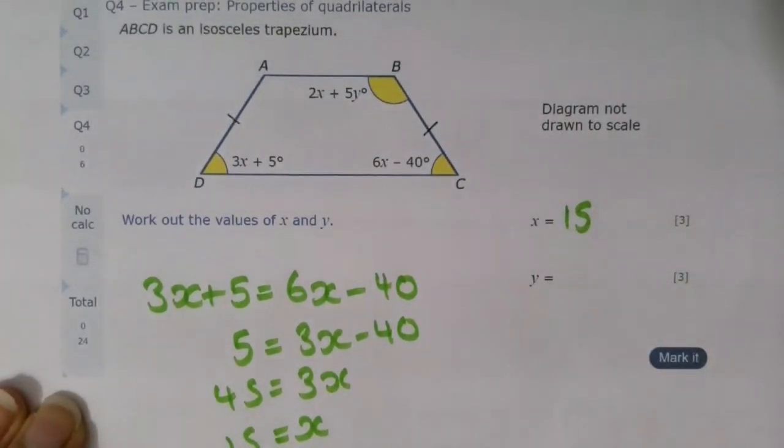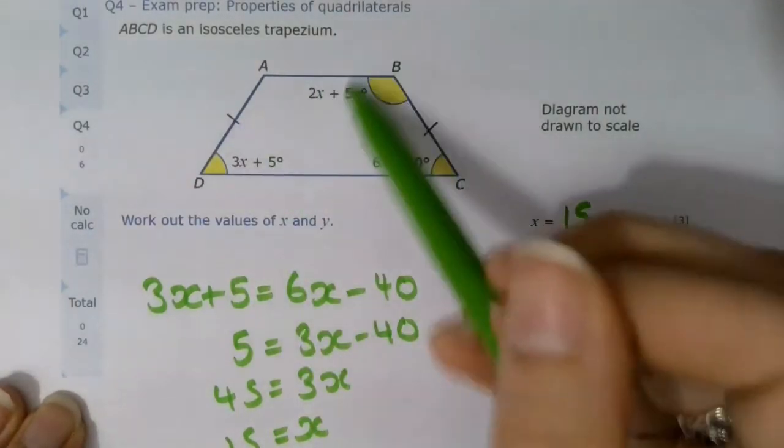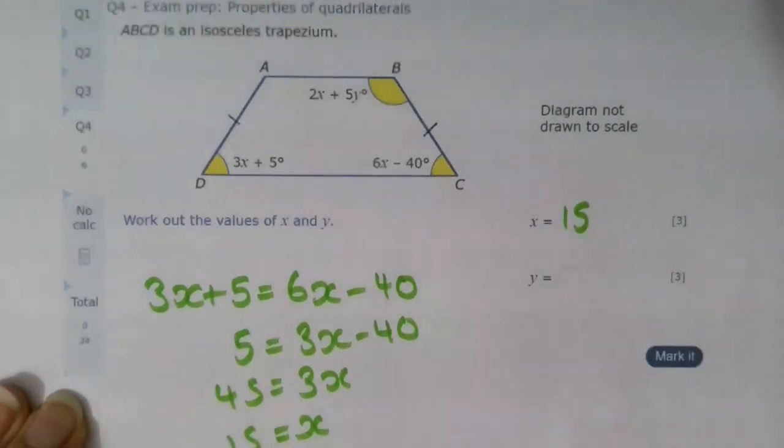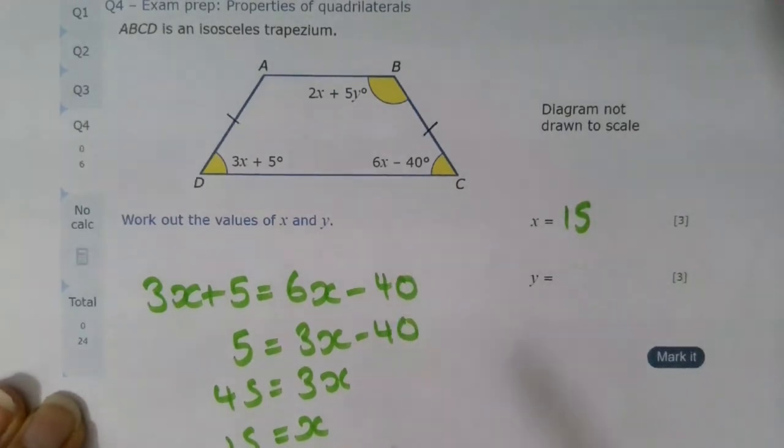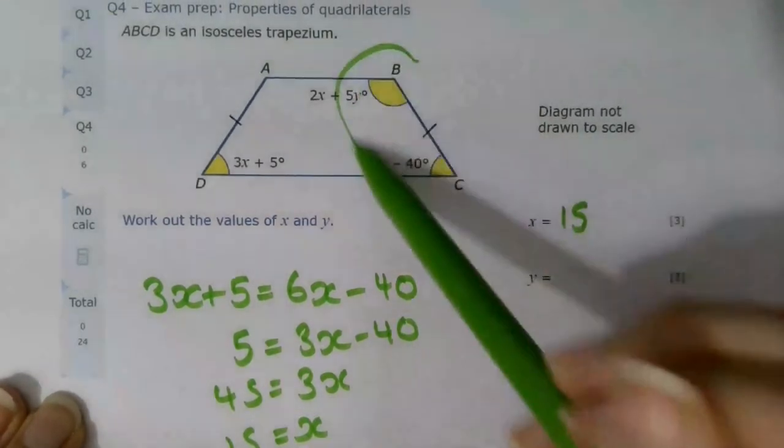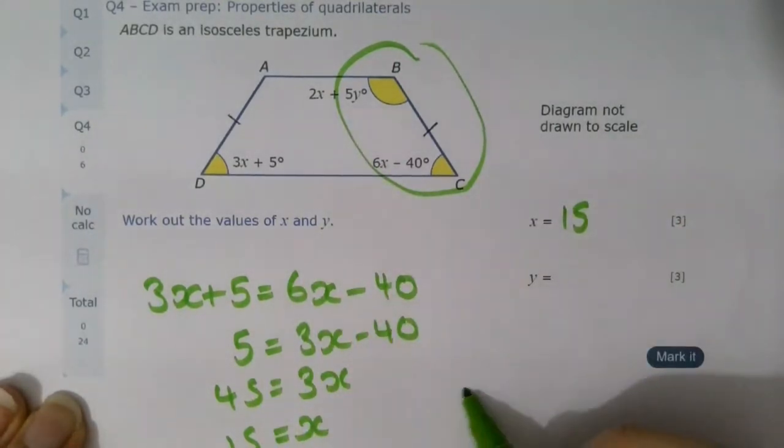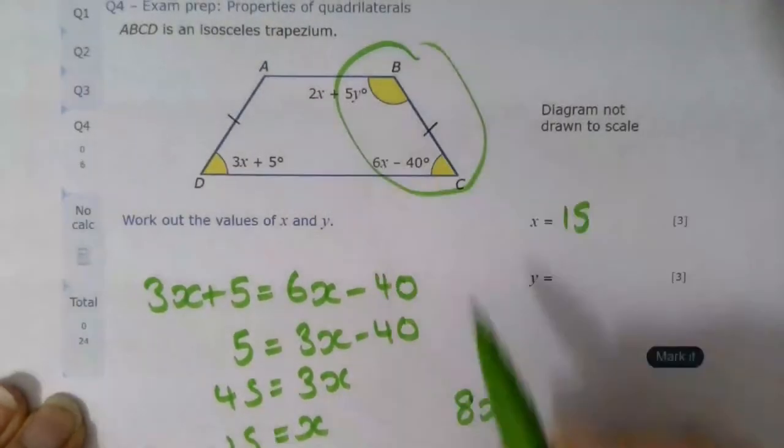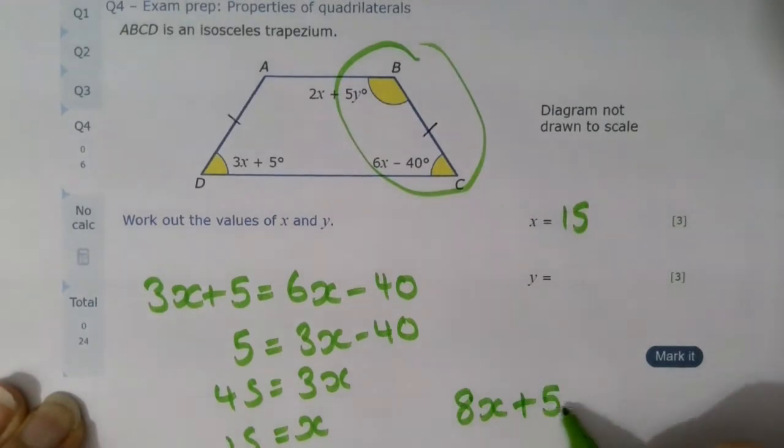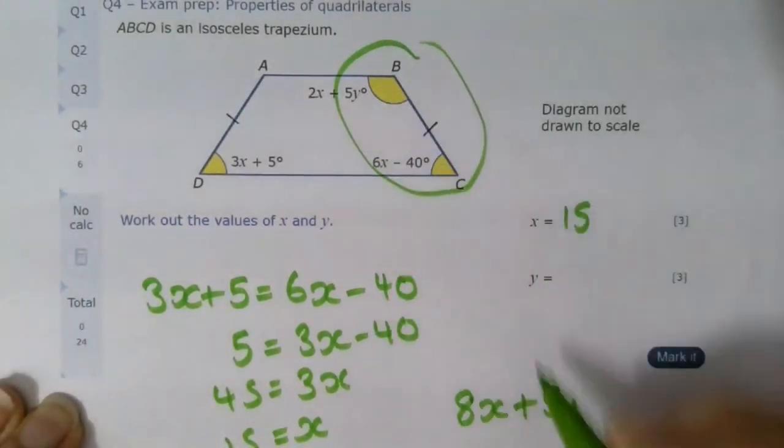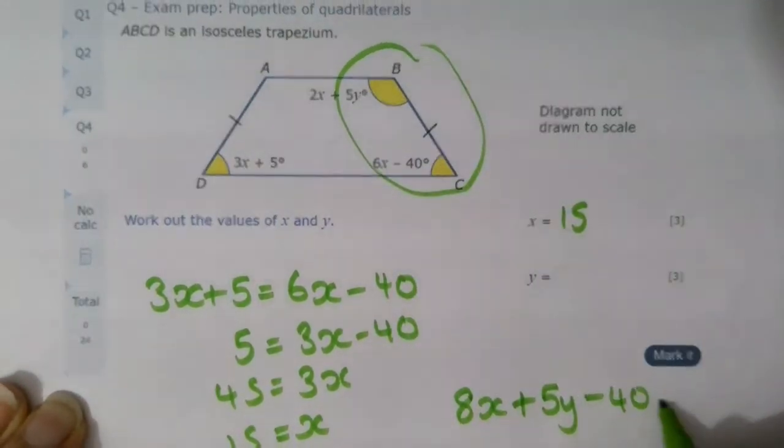Now we know that x is 15, we can use the fact that all four of these add up to 360, or we could use the fact that any pair must add up to 180. I'm going to use the fact that a pair add up to 180, those two angles there. So that gives me 2x and 6x, which is 8x, add 5y, take away 40, equals 180.